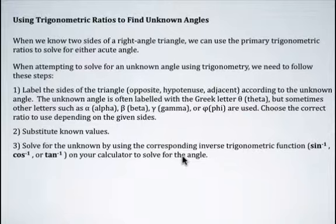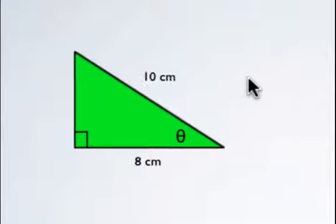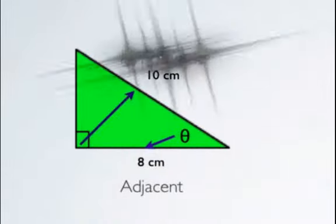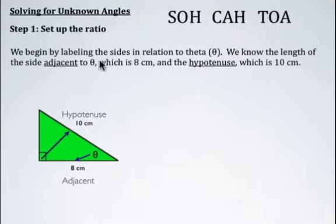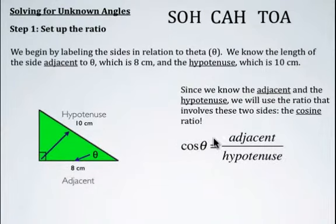Looking at an example here, we're looking for angle theta and we're given two side lengths. We can set up the ratio, so we begin by figuring out what sides we're talking about. We've got the adjacent side for angle theta and we have the hypotenuse. Since we know the adjacent side and the hypotenuse, we're going to use the trigonometric ratio that involves adjacent and hypotenuse, and that is going to be the cosine ratio, because cosine of theta is equal to adjacent over hypotenuse.